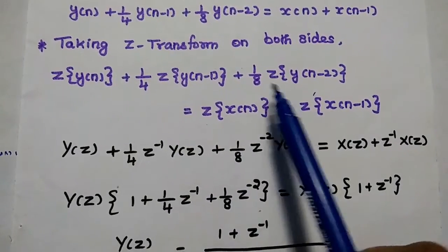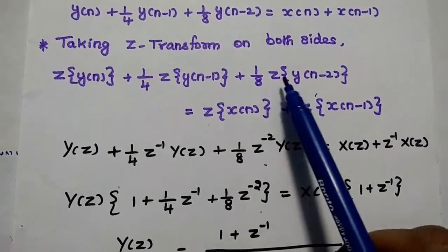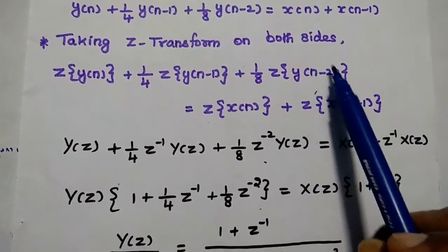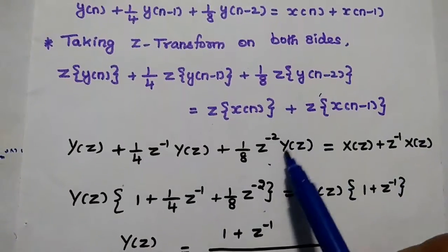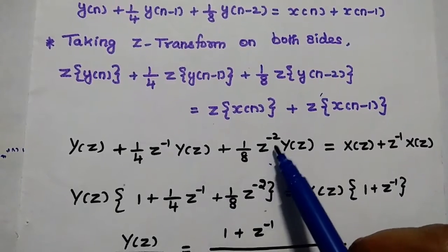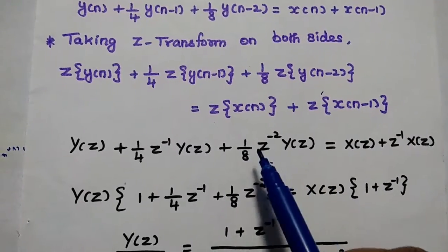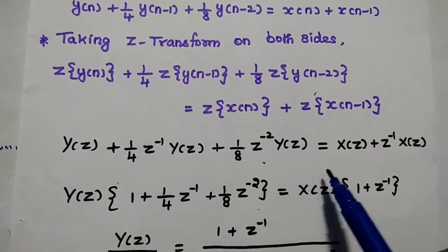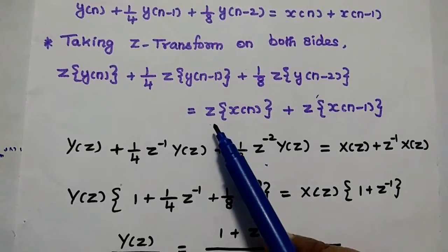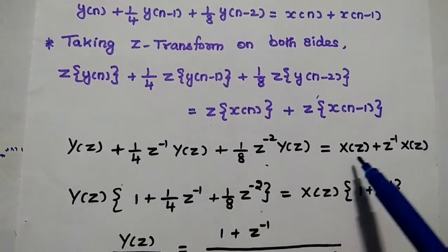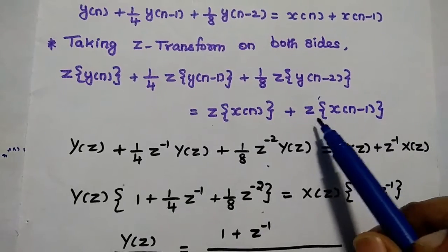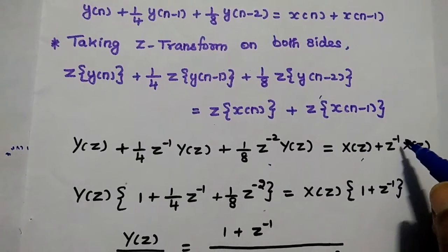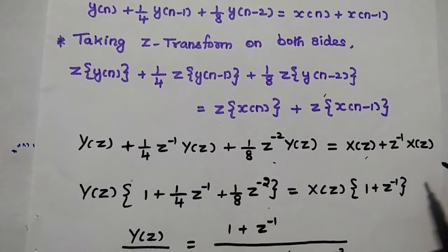For the next term, 1/8·y(n-2): Z-transform of y(n-2) is Z⁻²·Y(Z), so we multiply Y(Z) with Z⁻². That gives 1/8·Z⁻²·Y(Z). The right-hand side: Z-transform of x(n) is X(Z), and Z-transform of x(n-1) is Z⁻¹·X(Z).